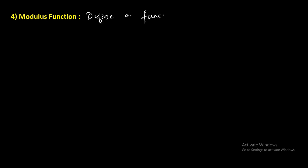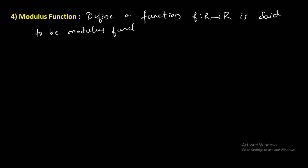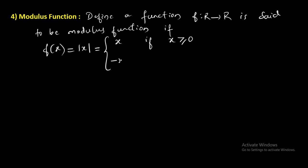Number four: modulus function. Define a function f from capital R to capital R — the set of real numbers to set of real numbers — is said to be modulus function if f of x is equal to modulus of x, which equals x if x is greater than or equal to 0, and minus x if x is less than 0.